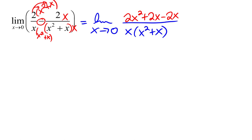So I'm going to see what I can do to simplify now. These guys will cancel and leave me a 2x squared. This x on the bottom will cancel, and I now have the limit as x approaches zero of 2x over x squared plus x.